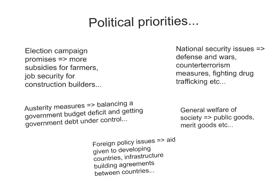The government's political priorities will affect its level of spending. Things like election campaign promises when people run for office — whether it's in Congress, Parliament, Presidency, or Prime Minister — they can promise things like more subsidies for farmers or job security for construction builders. These election campaign promises affect the political priorities and hence the government spending of the economy.